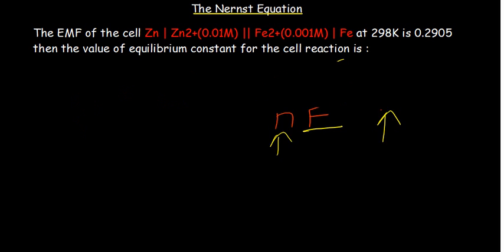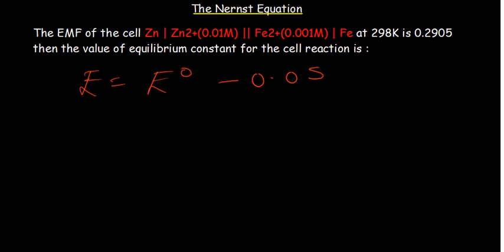At 25 or 298 Kelvin, we know that our formula is simplified to where we now just have 0.0592 over N and then log of Q.